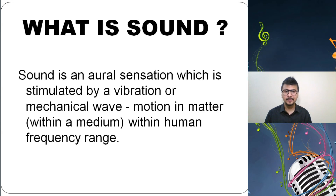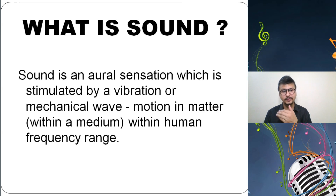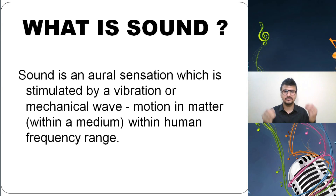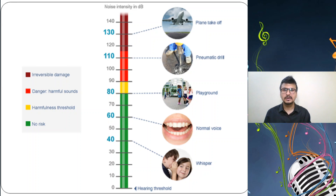When you talk about the human frequency range, frequency is measured in hertz. The human frequency range is generally 20 to 20,000 hertz. This is the frequency range of human beings — all the sound information we listen to comes under 20 to 20,000 hertz. There is also a noise intensity chart measured in decibels, bifurcated into four colors: maroon, red, yellow, and green.